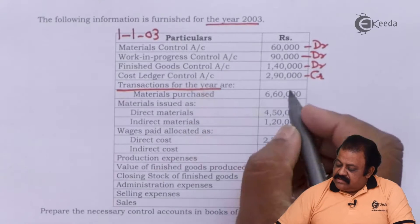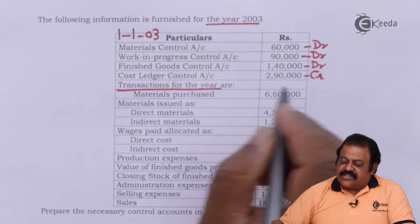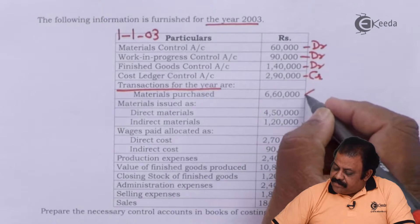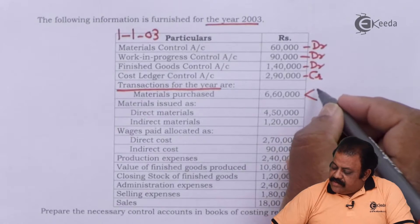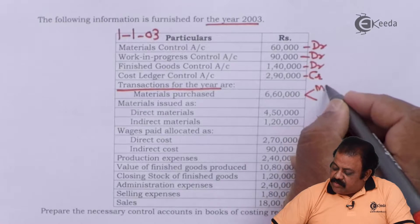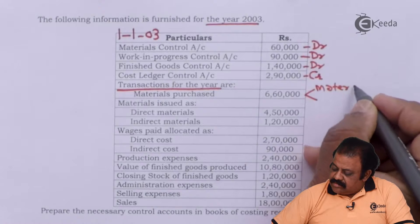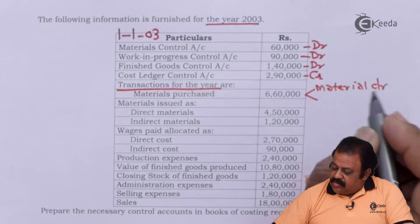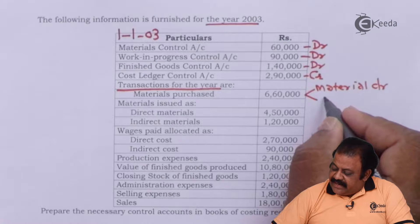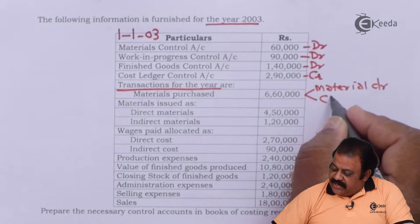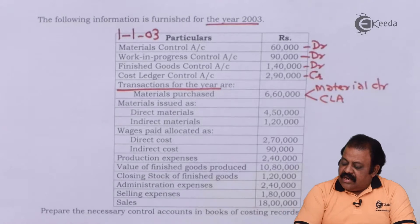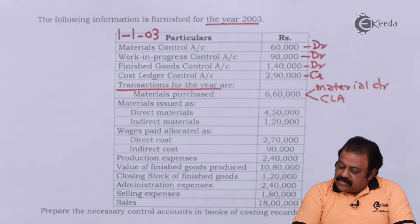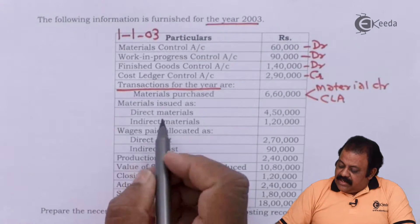Transactions for the year: Material purchased 6 lakh 60,000 — this will be debited to Material Control Account and credited to Cost Ledger Control Account.